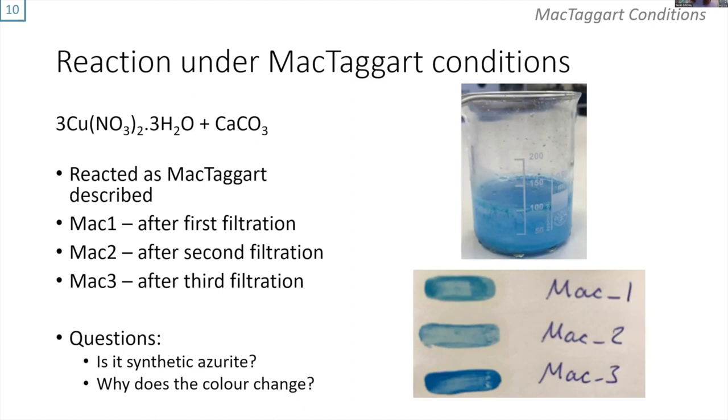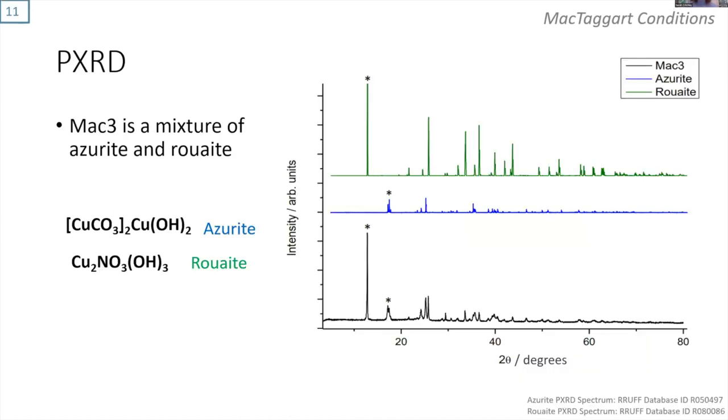So the questions remained: is this synthetic azurite, and why does the color change? We found that Mach 3 does contain synthetic azurite, but it also contains ruite. Ruite is the mineral name for a copper hydroxynitrate, which is green in color.